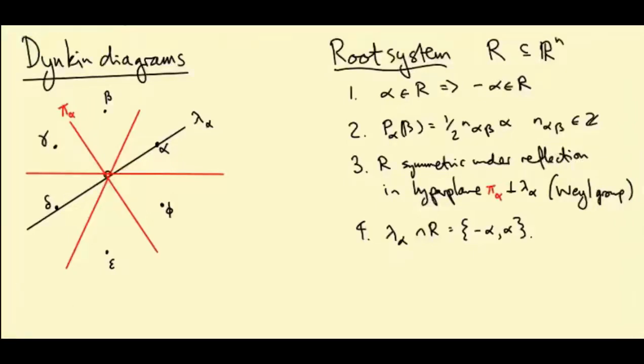Let's quickly recap what the axioms say. If alpha is a root, then minus alpha is a root. Over here you can see the root diagram of SU3, which is our prototypical root diagram, and certainly every root has an opposite root.